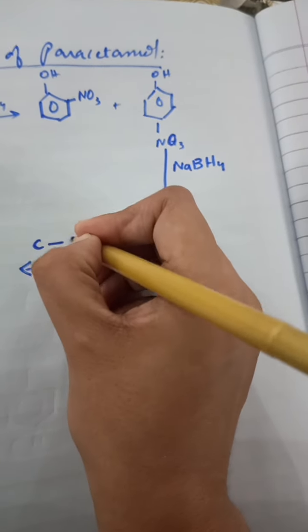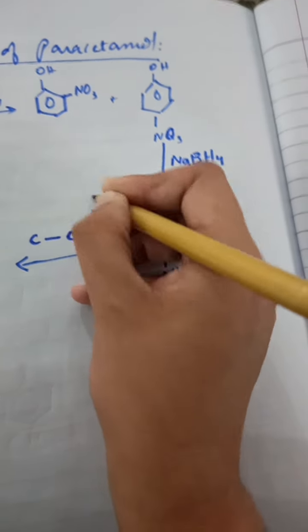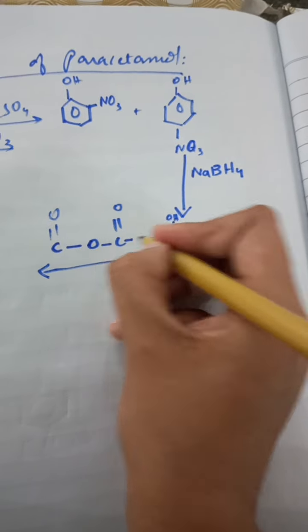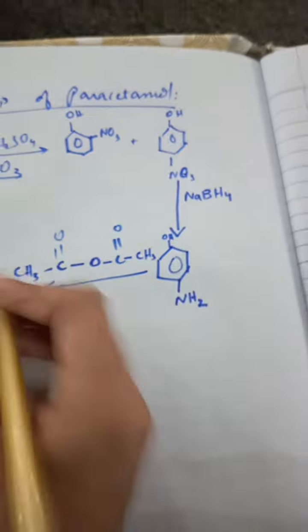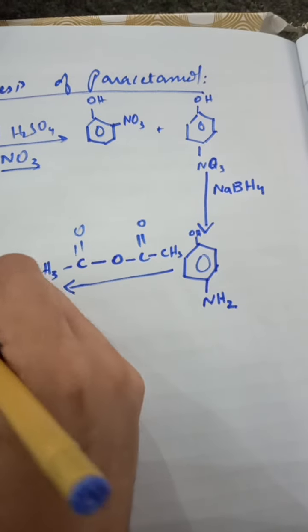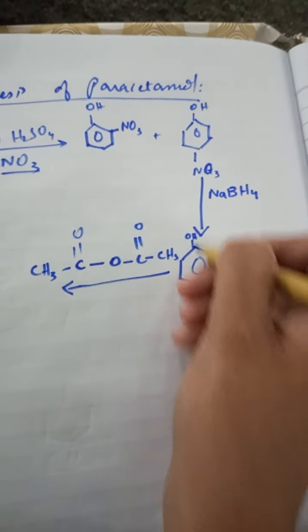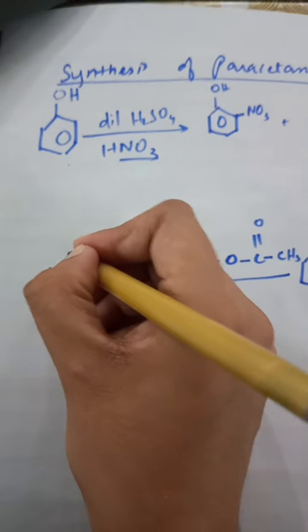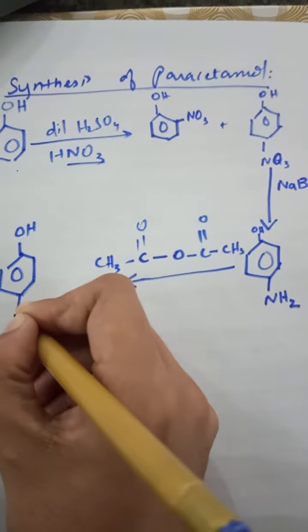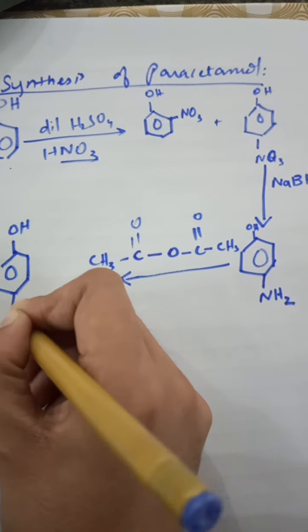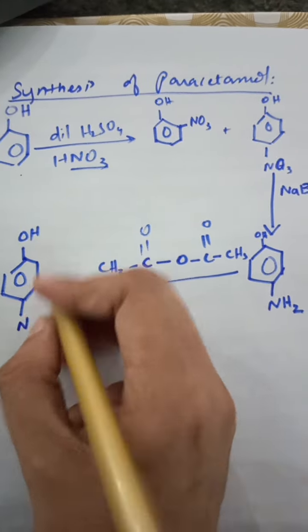Acetic anhydride structure is like this: CH3CO-O-COCH3, with oxygen in the center and CH3 groups on each side. In the presence of acetic anhydride, this 4-aminophenol becomes acetaminophen or you can say 4-acetamidophenol.